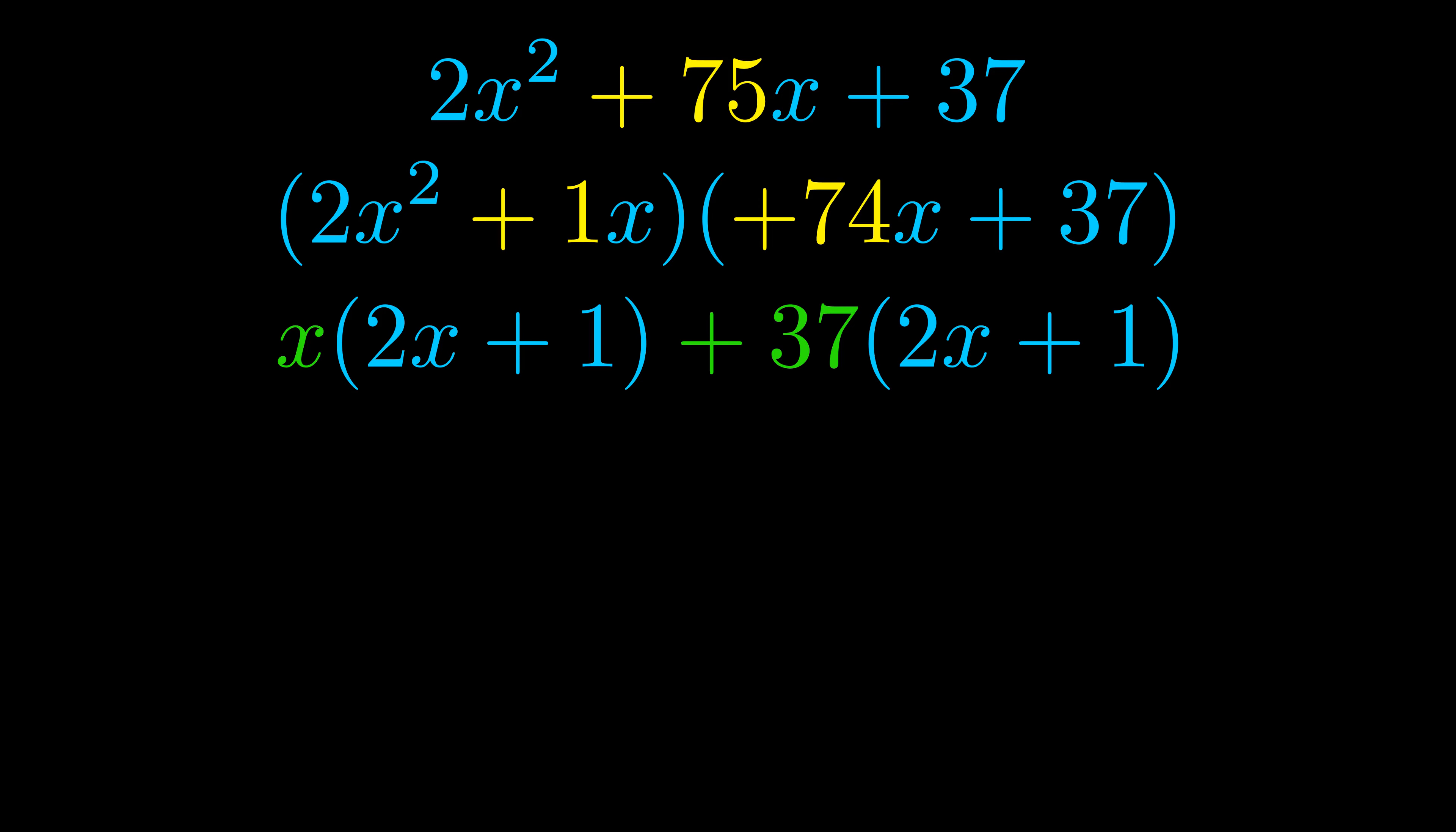Notice also how what remains inside of the parentheses is the same in both cases. The blue values are the same. Those blue values will become one of our factors and we will combine the two green values, the GCFs that we pulled out, to get the other one.